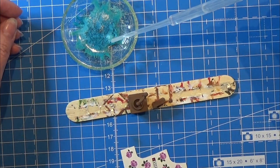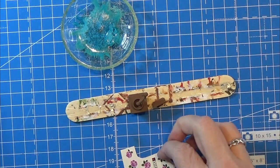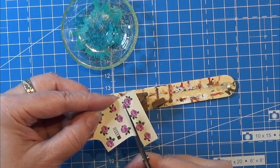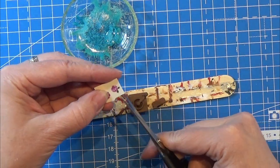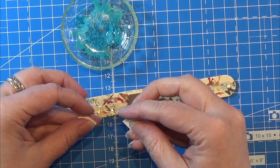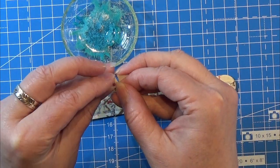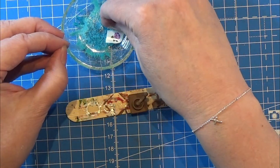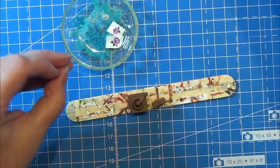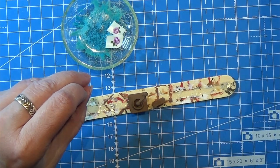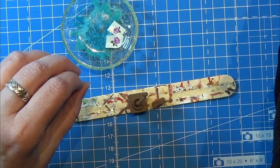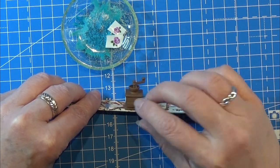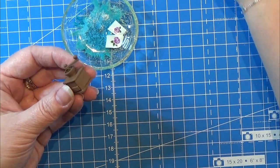I am taking some of these nail art decal water decal paper. You can get them all over eBay, AliExpress, Amazon, and stuff like that. I'm just putting them into water to make this little piece able to slide off carefully.